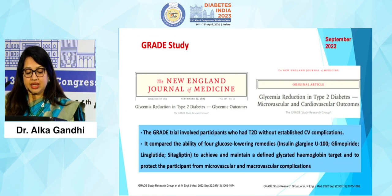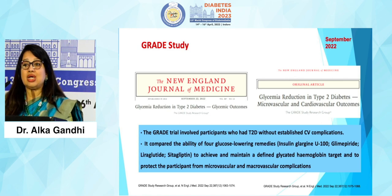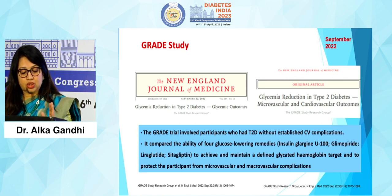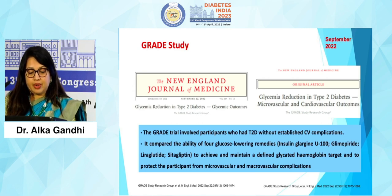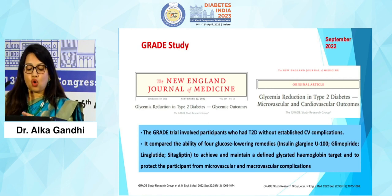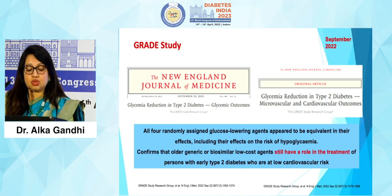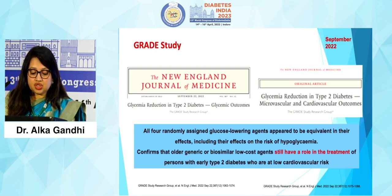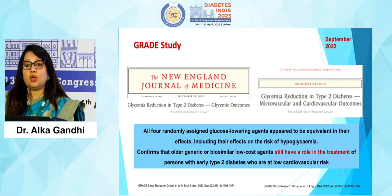The GRADE trial assessed efficacy and safety in type 2 diabetic patients, studying four modalities: glargine U100, glimepiride, liraglutide, and sitagliptin. They involved participants with diabetes without CV complications and compared efficacy in achieving A1c levels as well as protection from micro- and macrovascular complications. All four agents had equivalent effect, including on risk of hypoglycemia, confirming that older generic or biosimilar low-cost agents still have a role in treatment of persons with early type 2 diabetes at low cardiovascular risk.